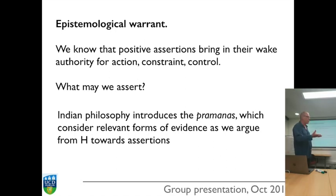What I'm getting at is that every time we assert something, we're, as it were, being political. We're making a bid to control the world, to insist that the world is one way rather than another. A positive assertion brings in its wake a claim of authority, authority for action, constraint, or control. And my question is, what can we assert? I'm standing outside of science here. I'm not adopting, I'm trying to understand what business science is.